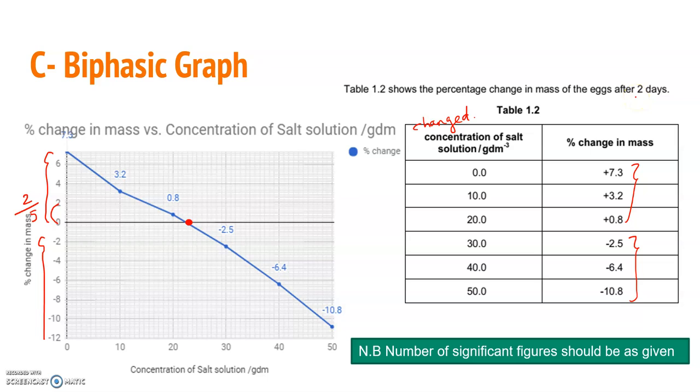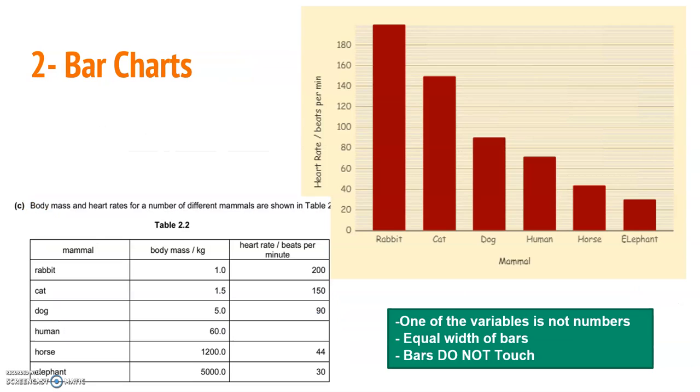Even if a value is a whole number, write it as 10.0 — the decimal places must be the same as the rest of the table, matching the significant figures. That's how we finish the graphs section.